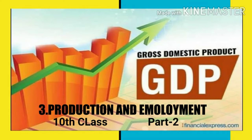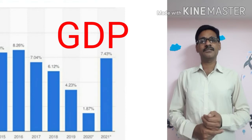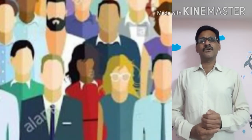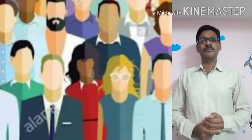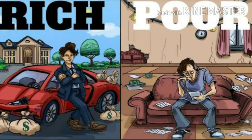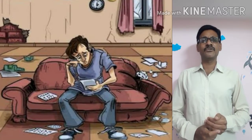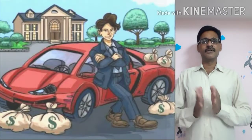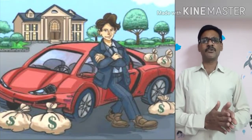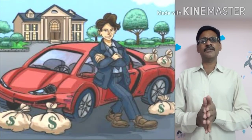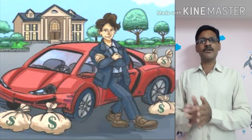Good morning children. Today we are going to discuss about GDP, Gross Domestic Product. Before going to that, generally we call people either poor or rich. How can we estimate them? As per their income capacities, we are going to categorize them as poor or rich people according to their family income. What about a country?